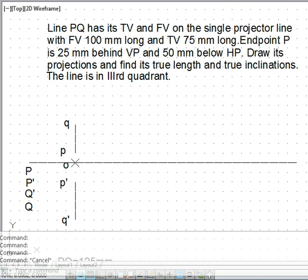We can of course make use of the simple method in which we make the top view or the front view as parallel to x-y line and on the other side we can get the true length and the true inclinations. But using that procedure we will not be able to reach the traces of this particular line.